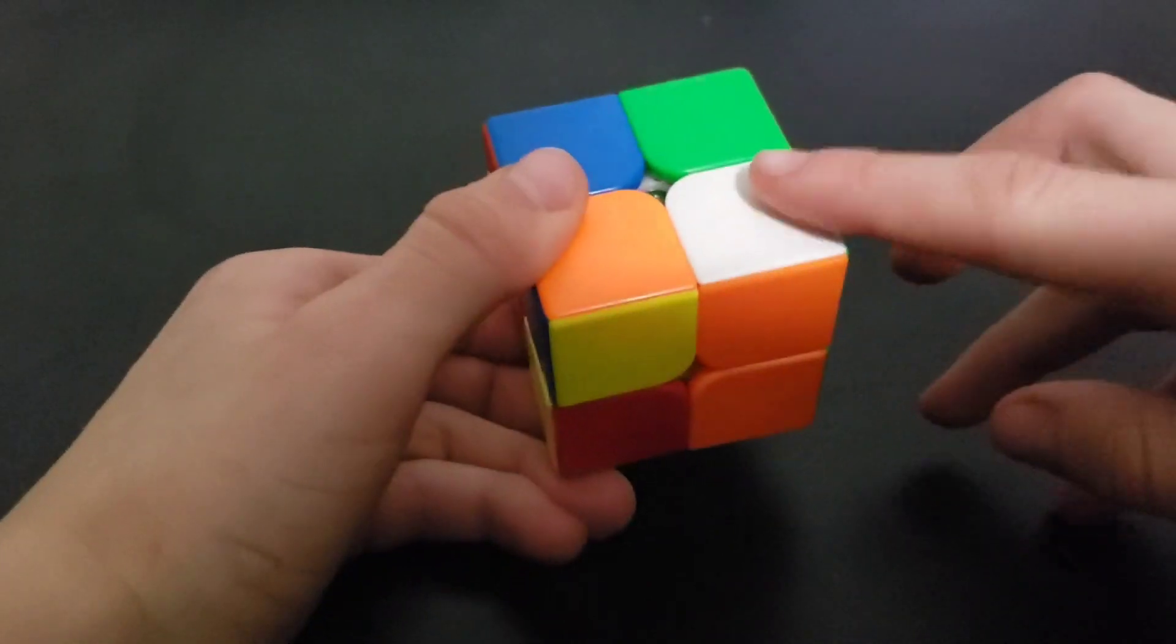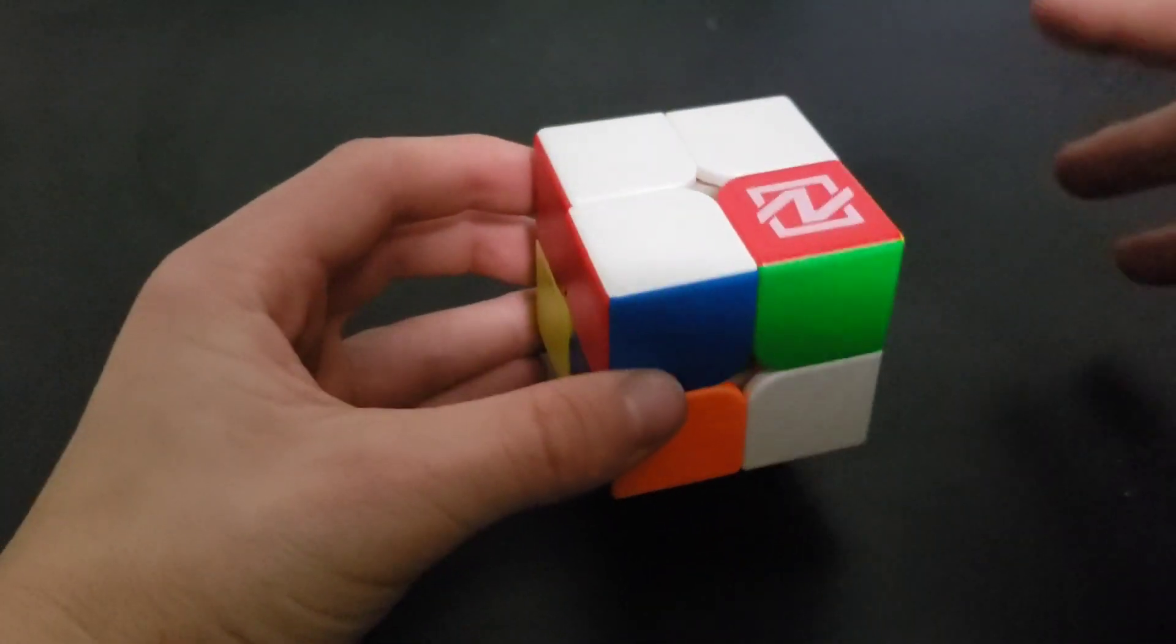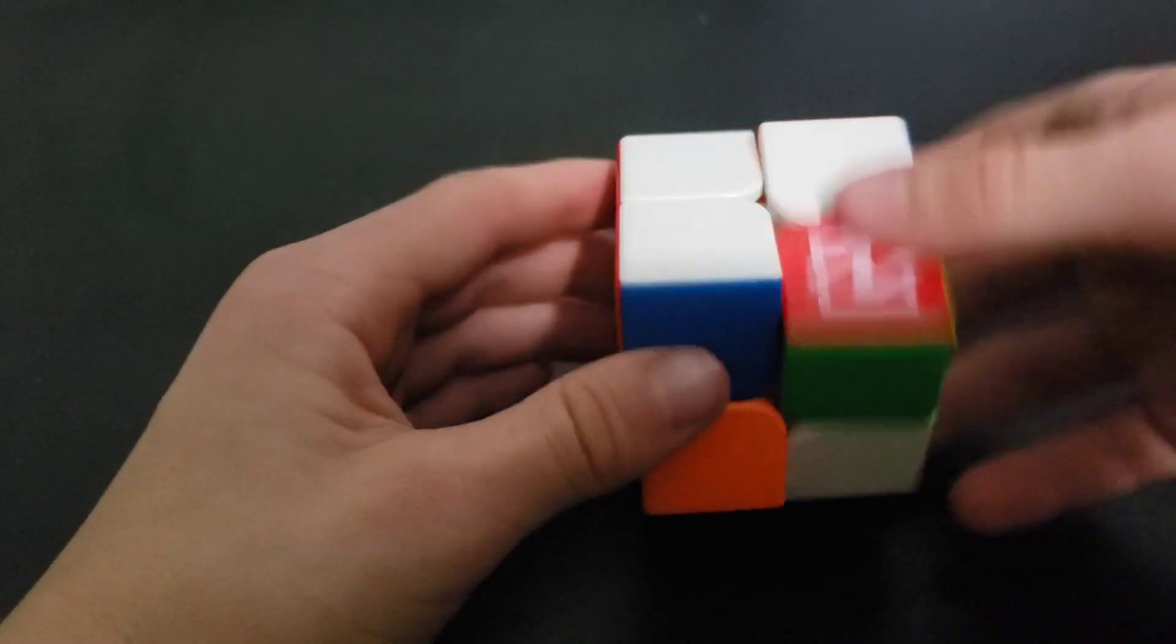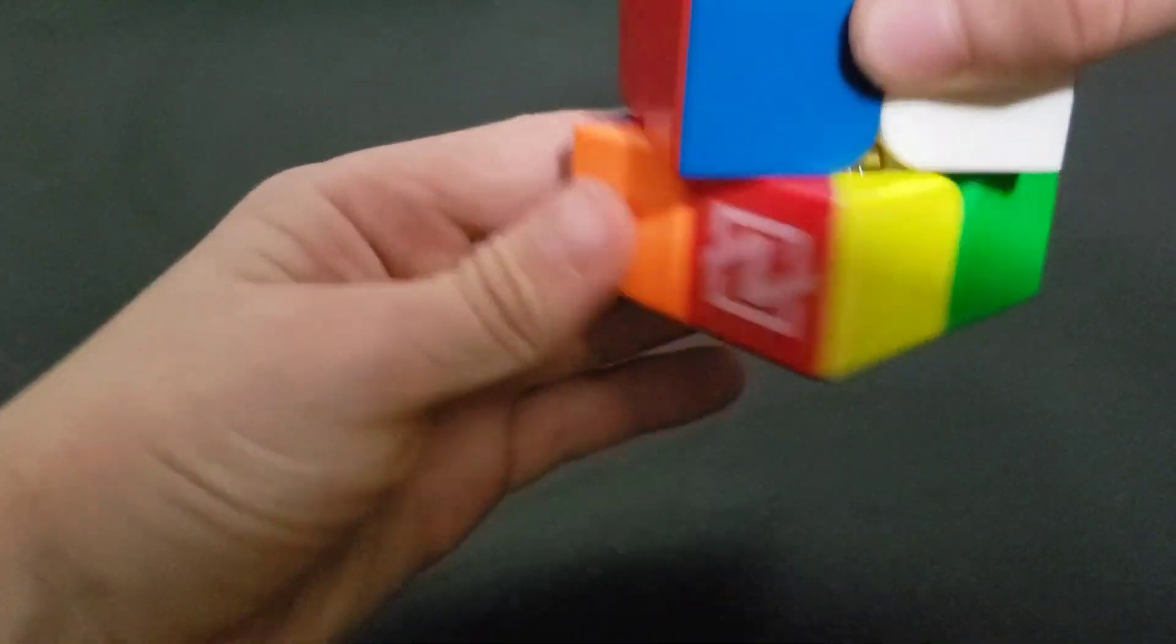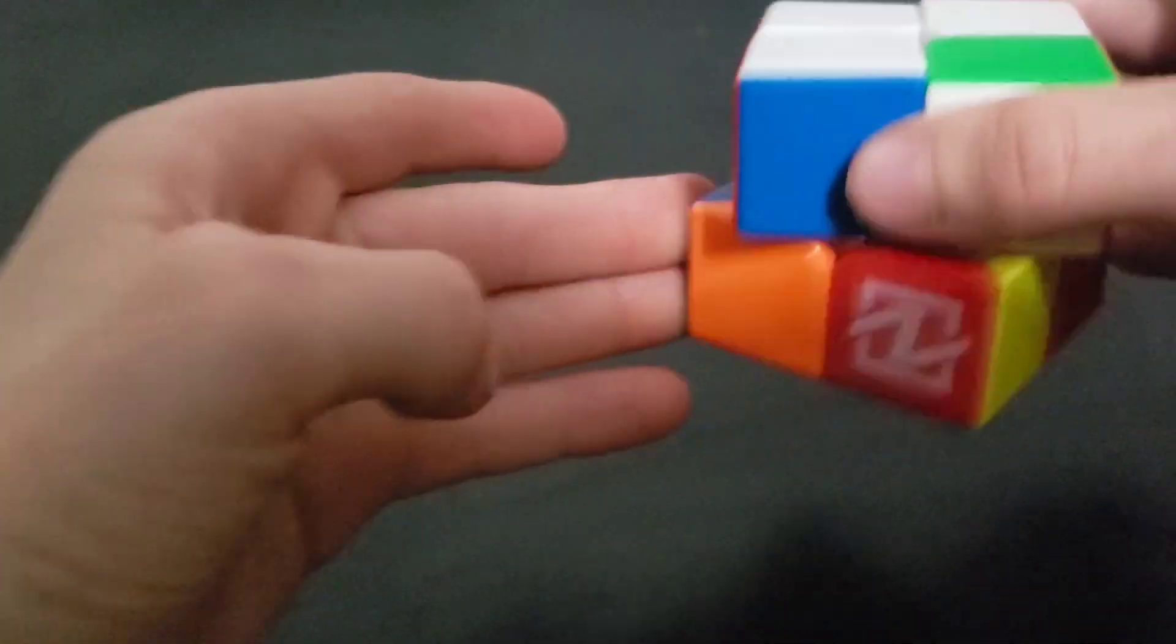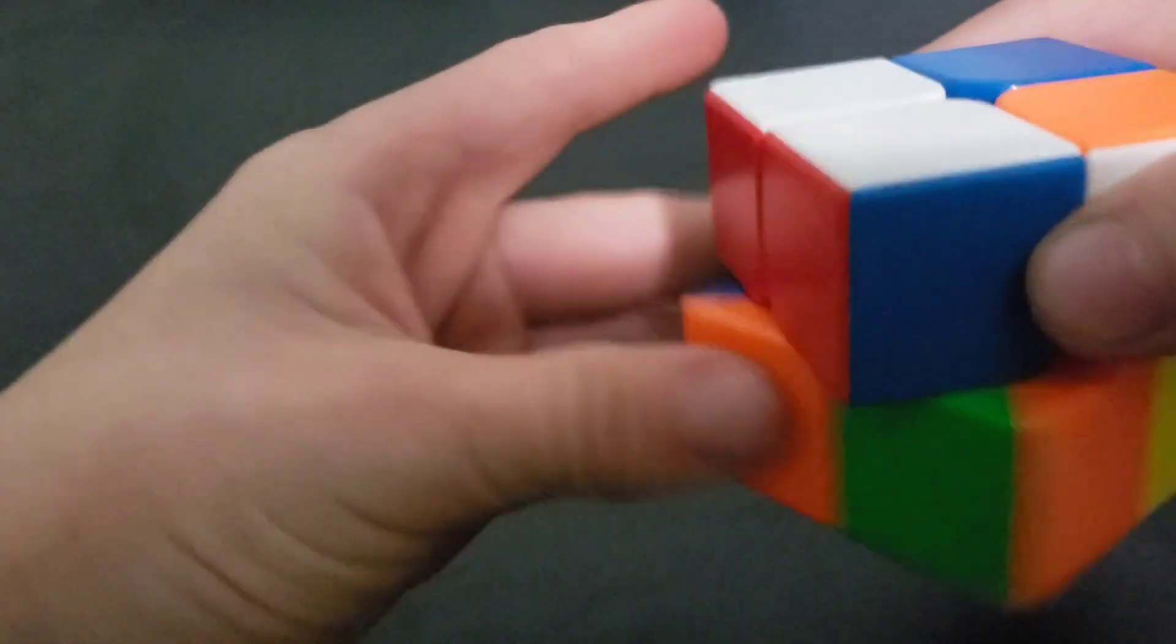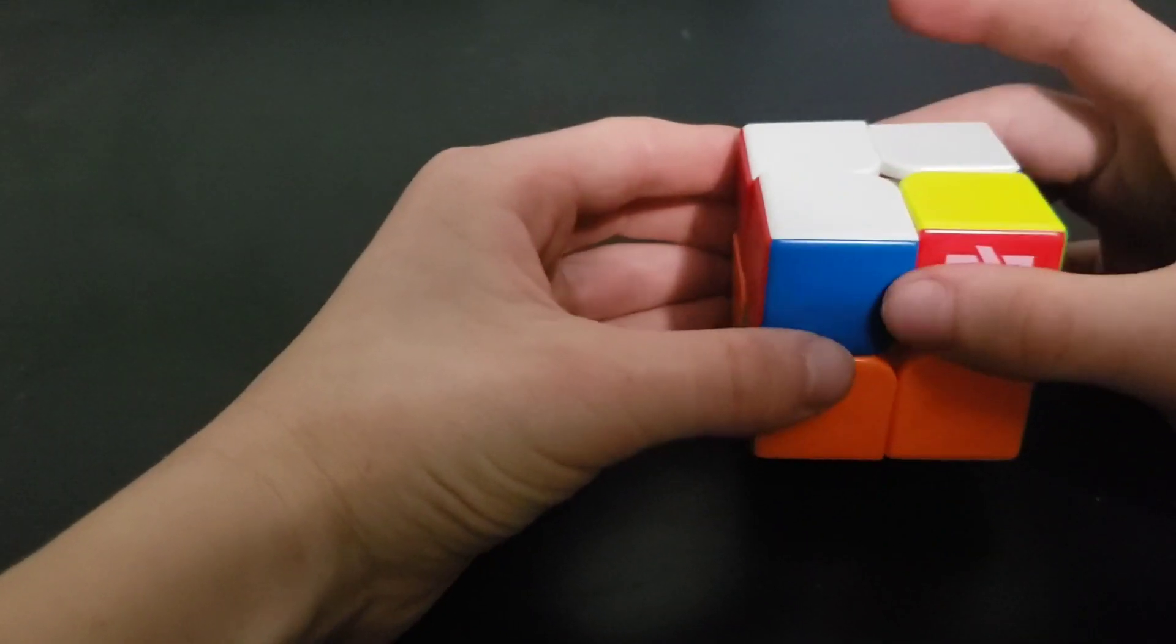Like this and you're going to want the white here, here or here. So it can be anywhere over there. Then what you're going to want to do is follow these steps: right inward, bottom, left, right up, down this way. And you're going to want to keep doing these steps until you get four whites on the top.